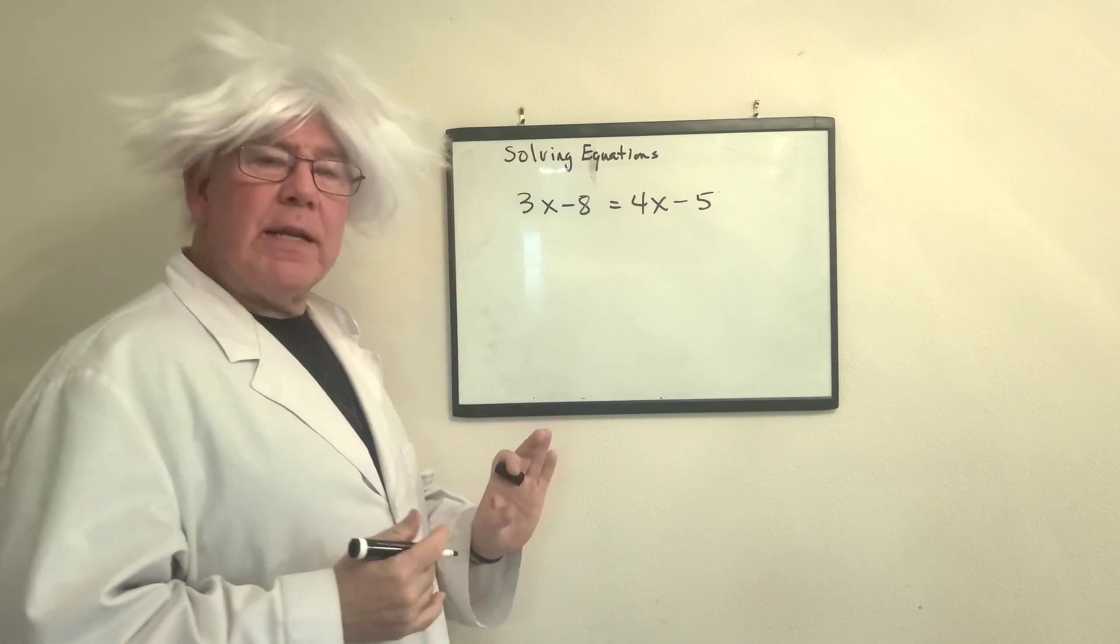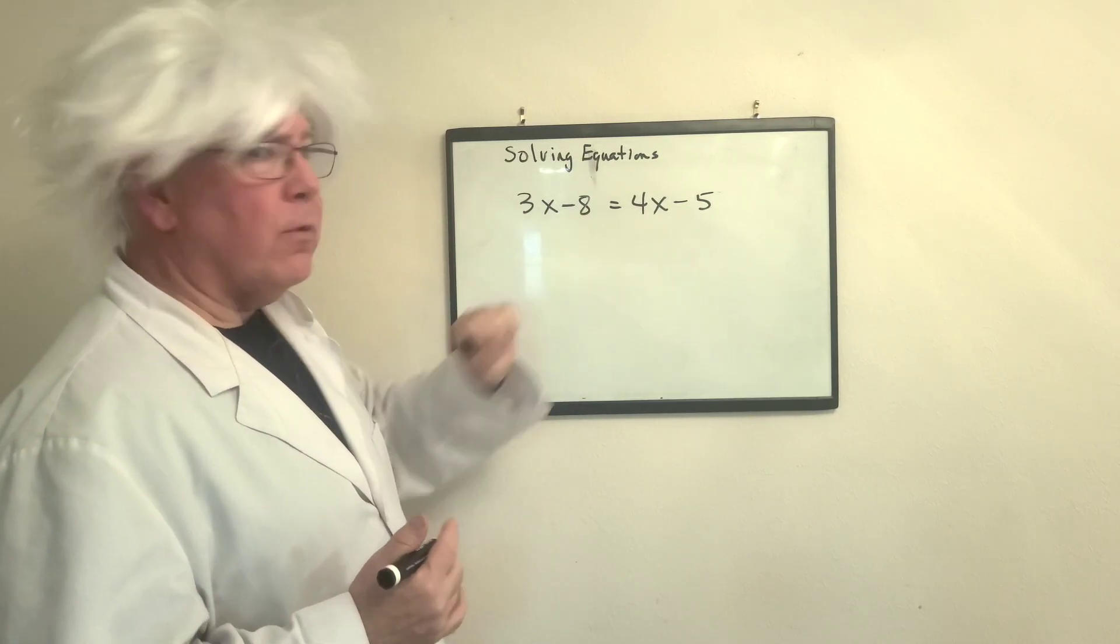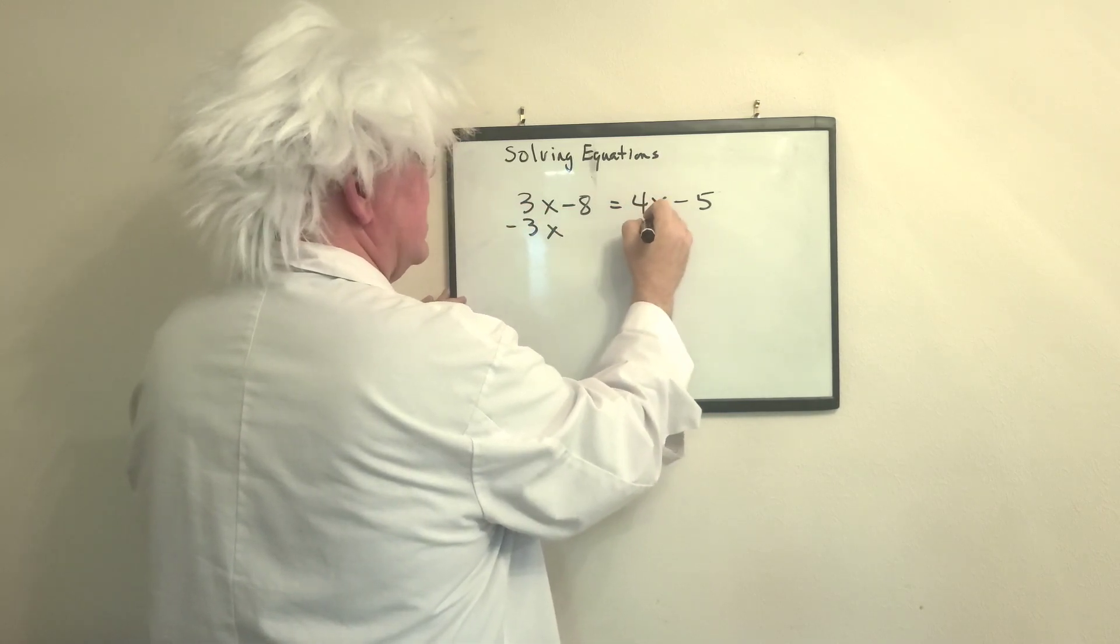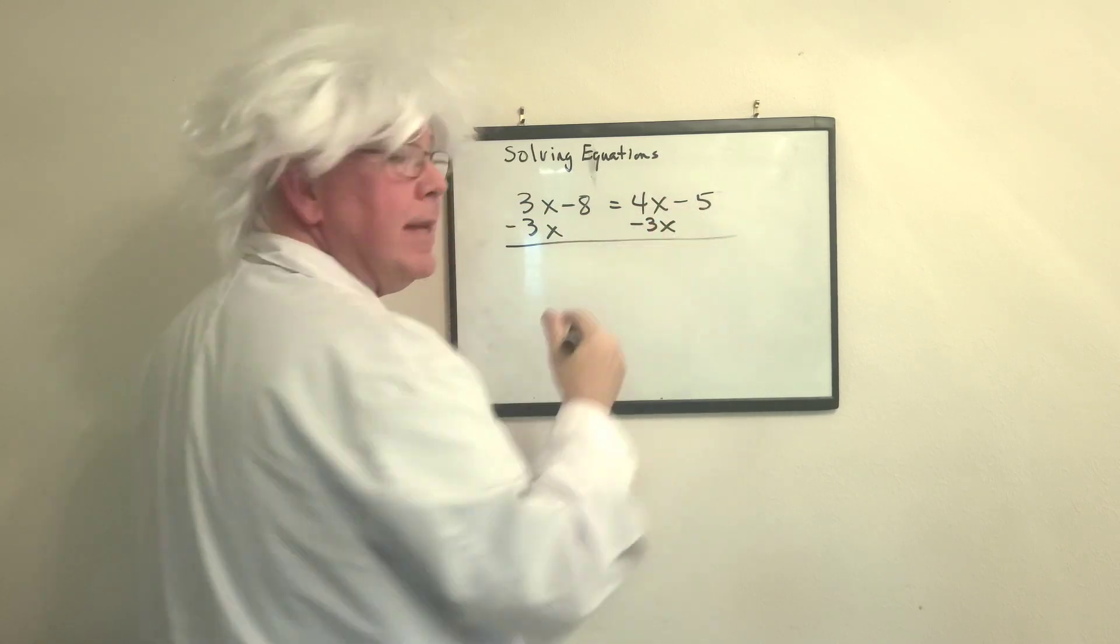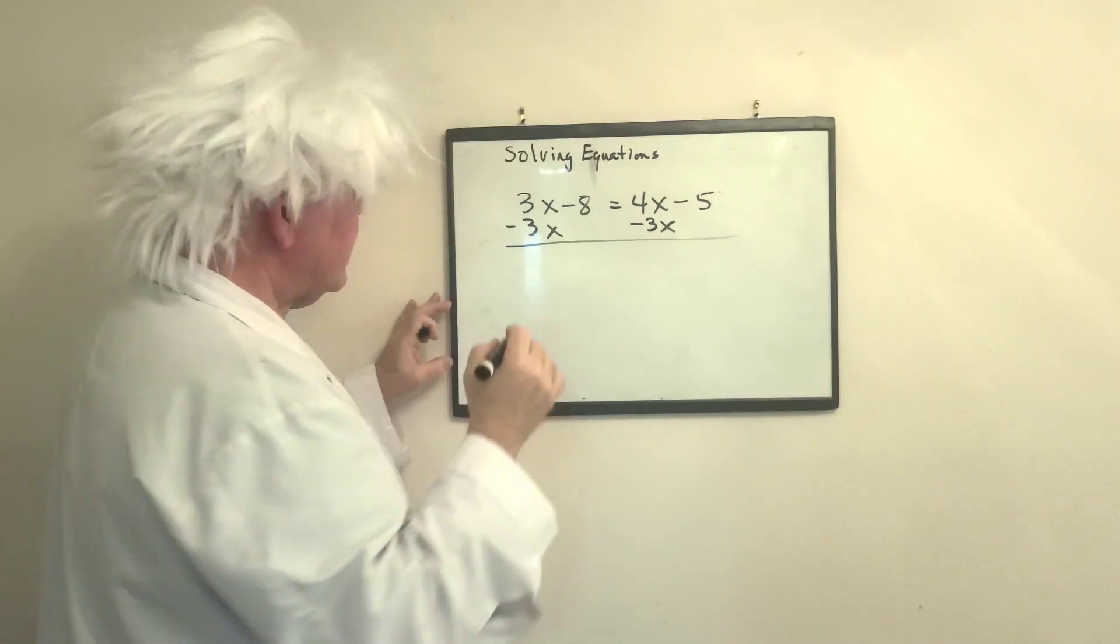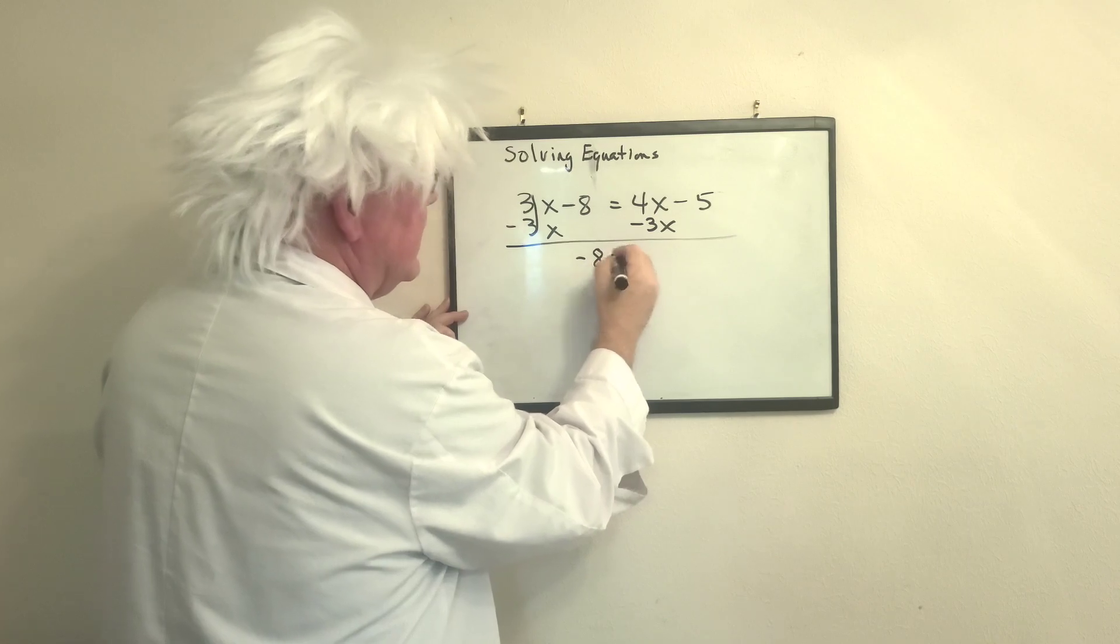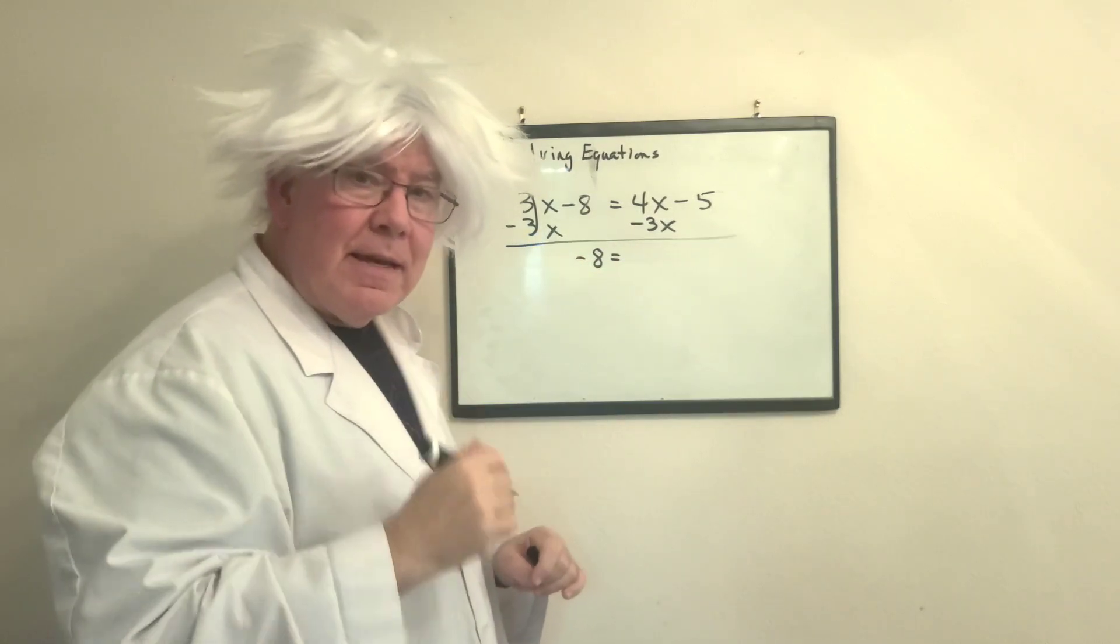So, the first thing I need to do is say, okay, what do I have? I have 3x on this side and 4x on this side, so I'm going to subtract 3x from both sides, okay? Now, please be careful. This creates a zero pair. When you bring down the 8, please don't forget the negative sign, okay?